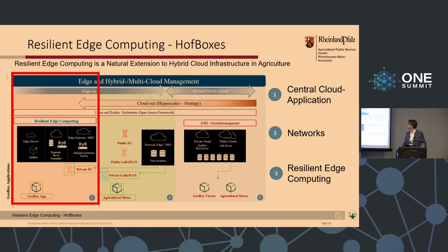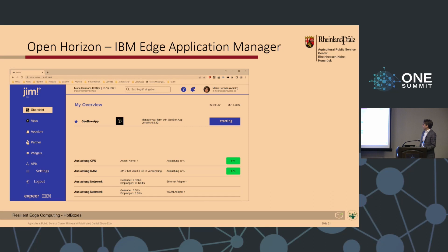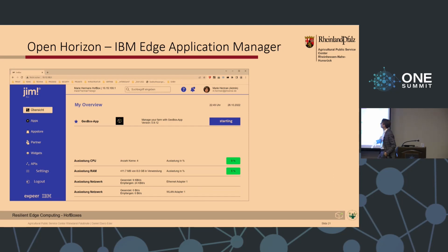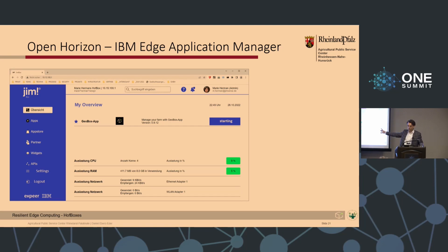We will focus on this overview, developed by Xperia, my partner here today, and IBM. You can see the downloaded applications on your edge device. In the application manager, you have the possibility to containerize applications — and this container is now ready to start. You see the start button in order to launch the application: GeoBox app on your edge device.